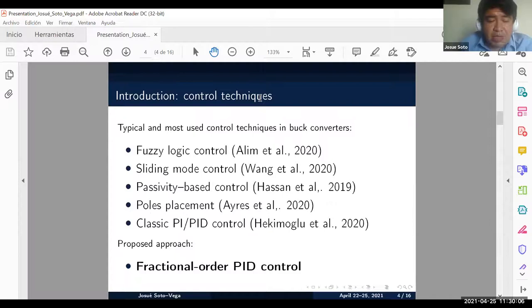The most common control techniques in DC-DC converters are fuzzy logic control, sliding mode control, passivity-based control, pole placement, classic PI and PID control, and our proposed approach, fractional order PID control.